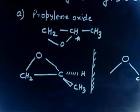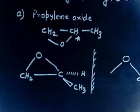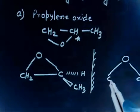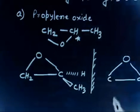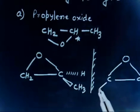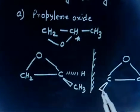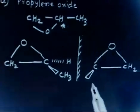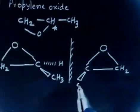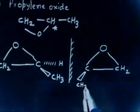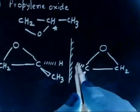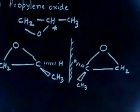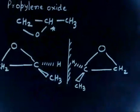For the mirror image: here you have CH₂ and here you have carbon. This side will have CH₃ and this side will have hydrogen. So these are the two enantiomers.